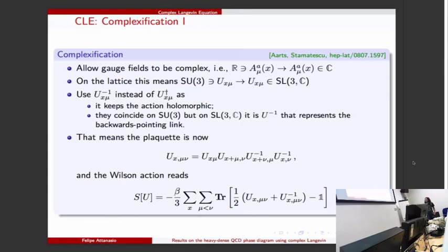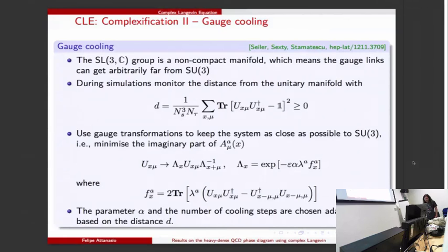But we have to be careful with the unitarity norm. Basically we measure how far the system is from the SU(3) manifold, and if it gets too far we know that the distribution doesn't converge to the right result or maybe it doesn't converge at all.